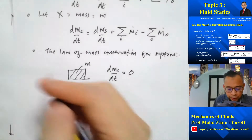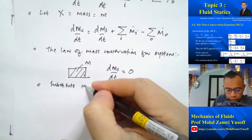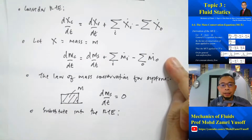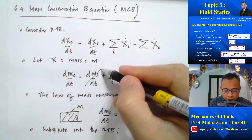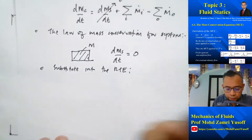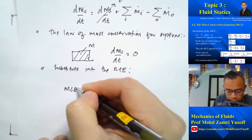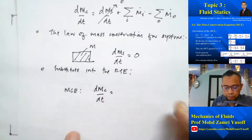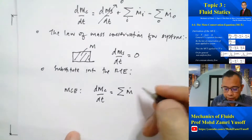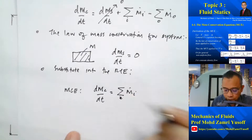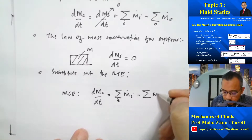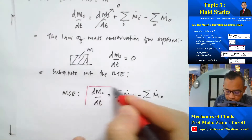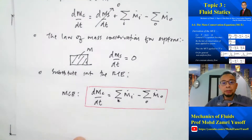We can now substitute into the Reynolds transport equations — the Reynolds transport equation applied to mass. The system term goes to zero, and we obtain our mass conservation equation, which says the rate of change of mass for the control volume must be equal to the rate at which mass enters the control volume at the inlet minus the rate at which mass exits the control volume at the outlet.